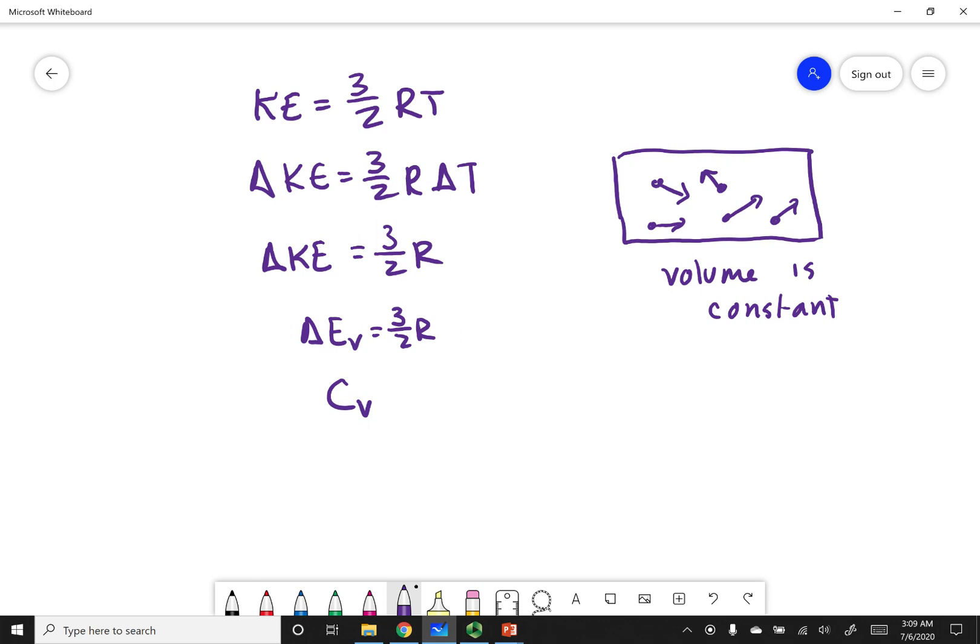Now let's go ahead and look at this process under constant pressure. If I have constant pressure, that means my volume can change. And if my volume can change, that means my energy is not only translational, but also means that some of my energy can be used to expand into the new volume.